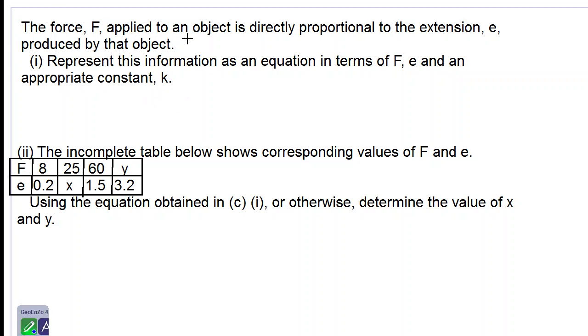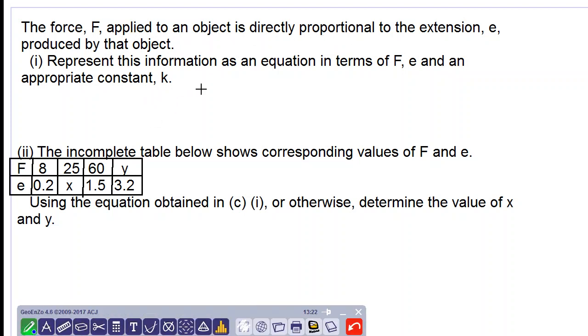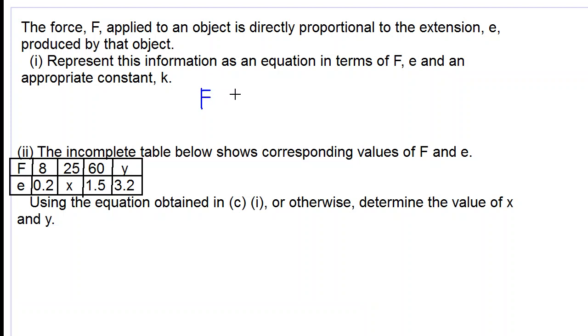F is directly proportional to E, so we can write F ∝ E. This means F equals a constant k times E. So our equation is F = kE.